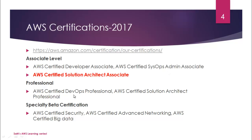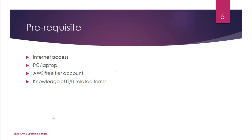They've also released a specialty beta certification tier, expected to go live around March — it's currently in beta. In the specialty tier there are currently three certifications: certified security, certified advanced networking, and certified big data. The prerequisite to attend any specialty exam is that you must pass at least one of the associate level exams first.